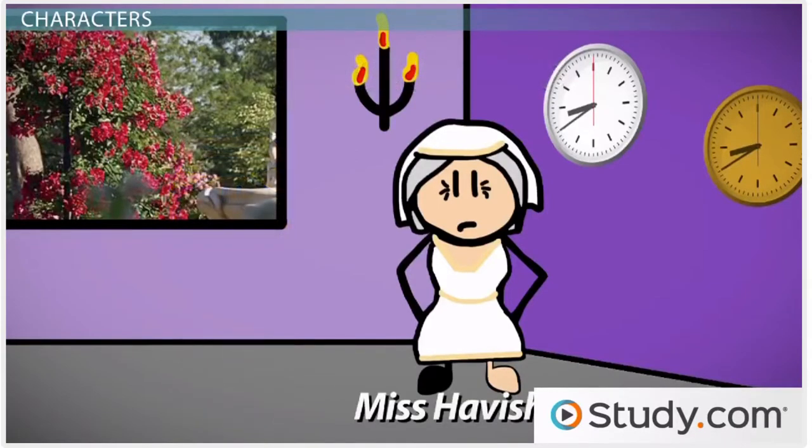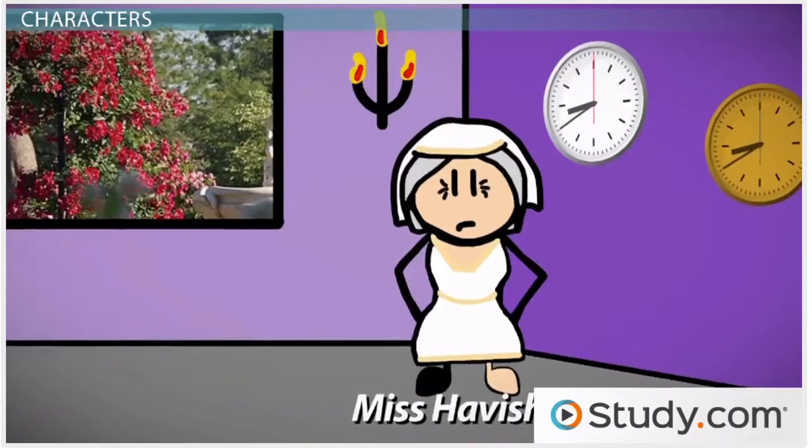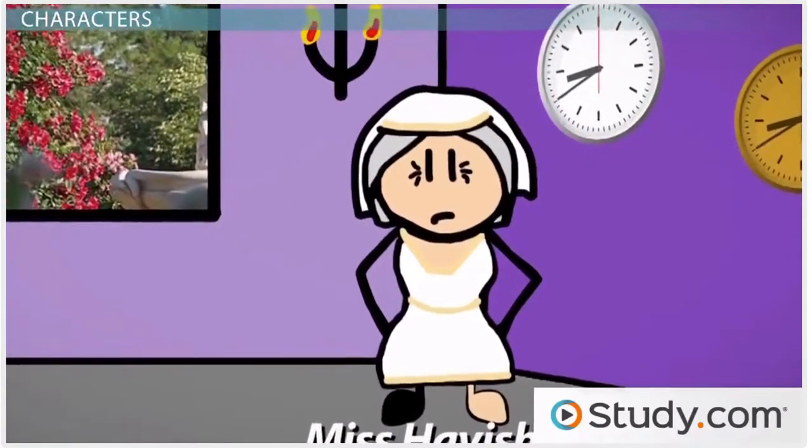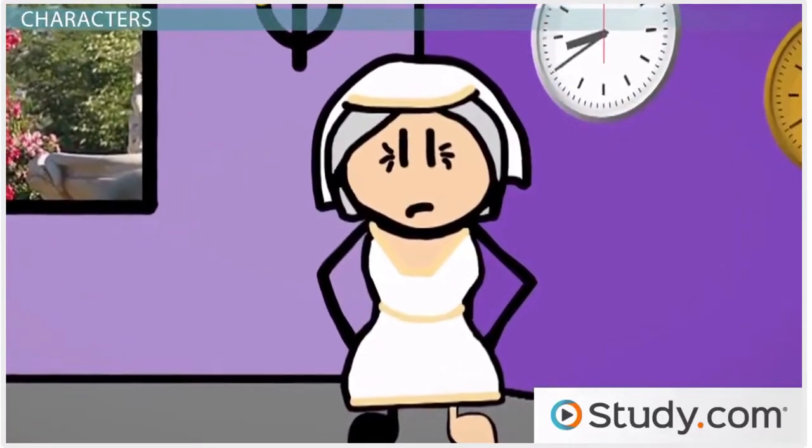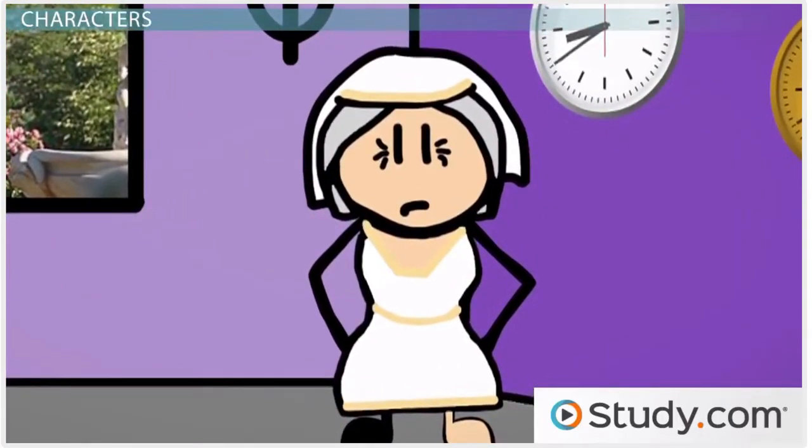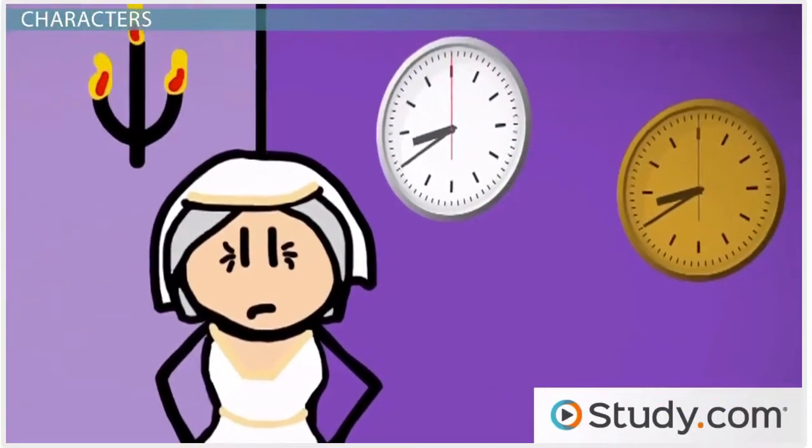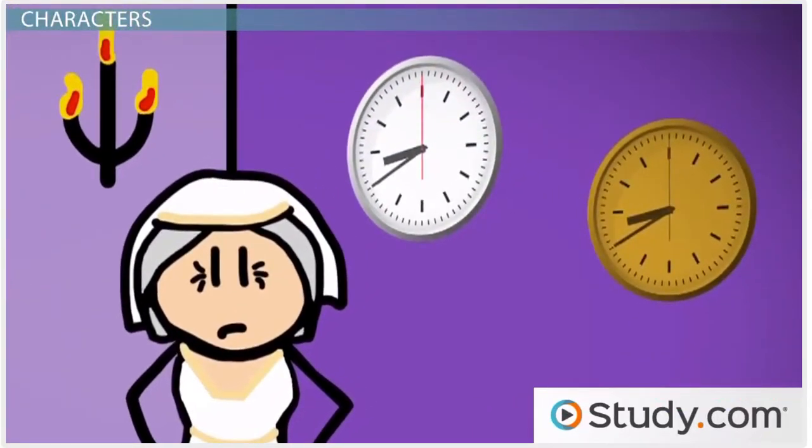The character of Miss Havisham was stood up at the altar a long time ago, but instead of moving on, she is still wearing her wedding gown several decades later. She keeps her house as it was the day of the wedding, with the cake rotting and the white decorations yellowed and falling apart. Even the clock in her house is stopped at 8:40, the exact moment when Miss Havisham finds out she's not getting married.